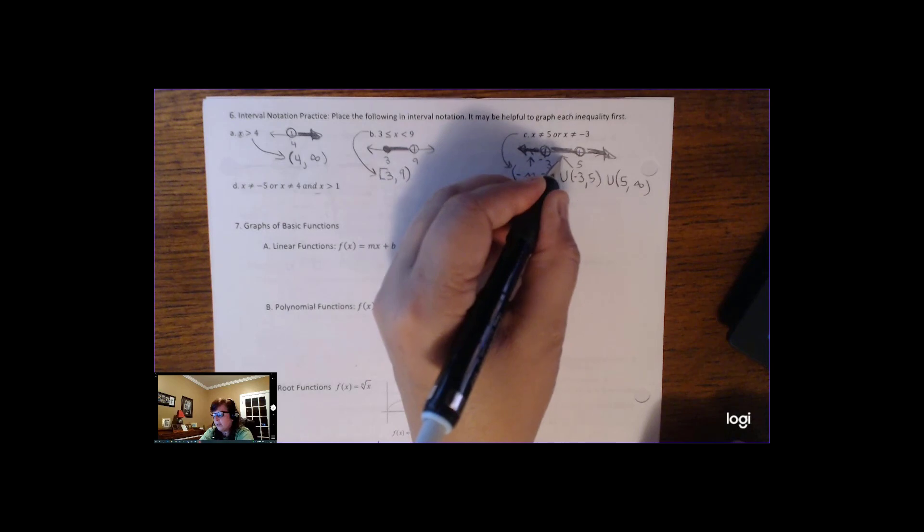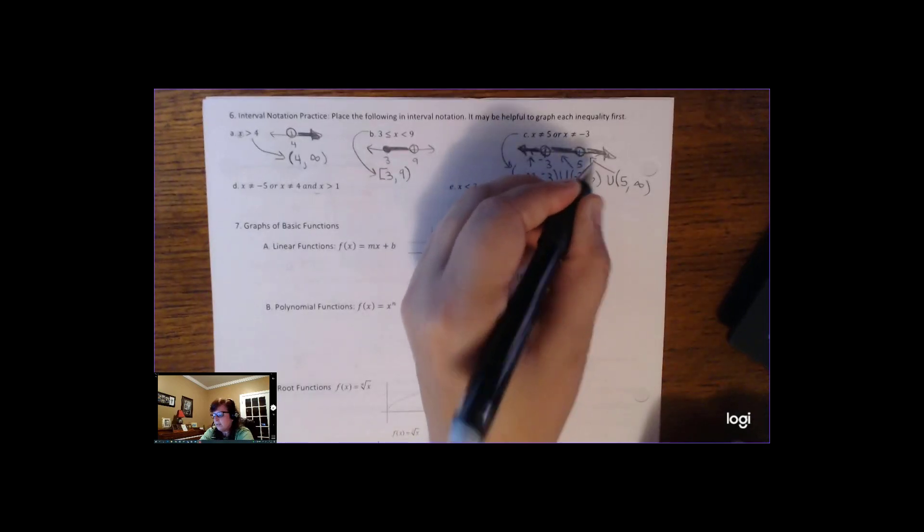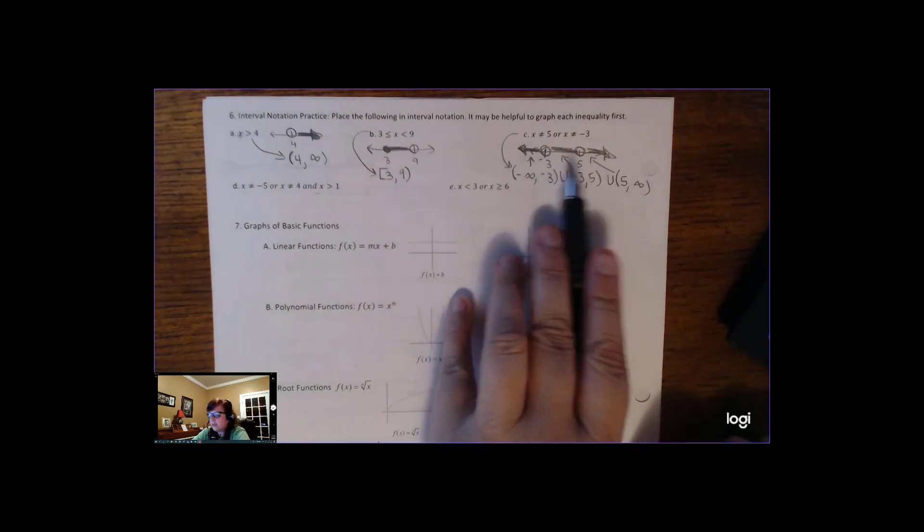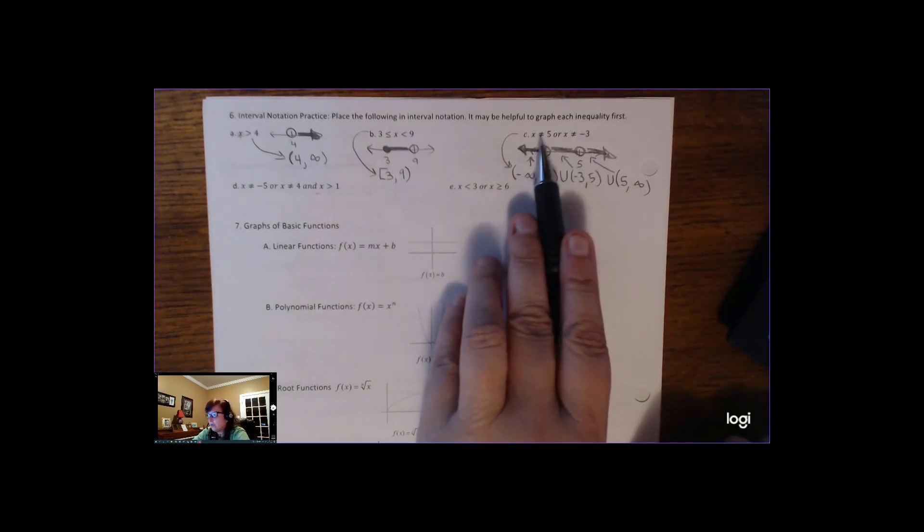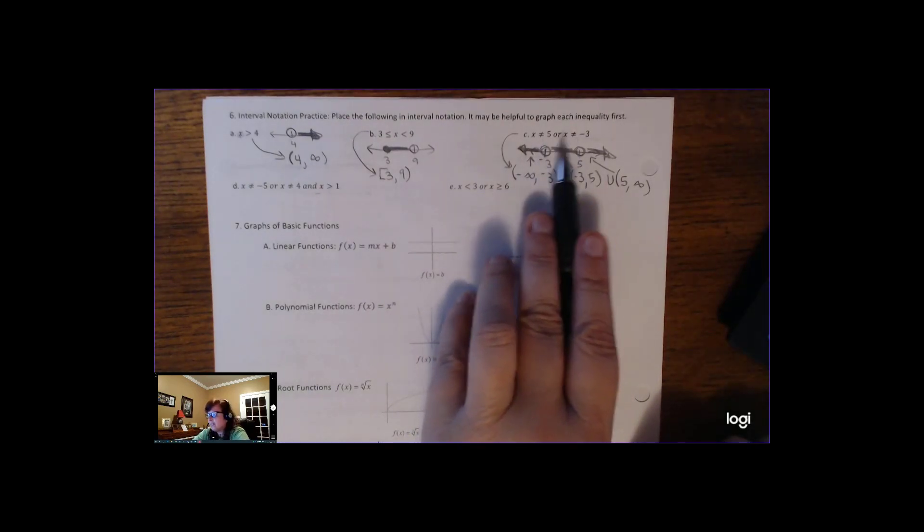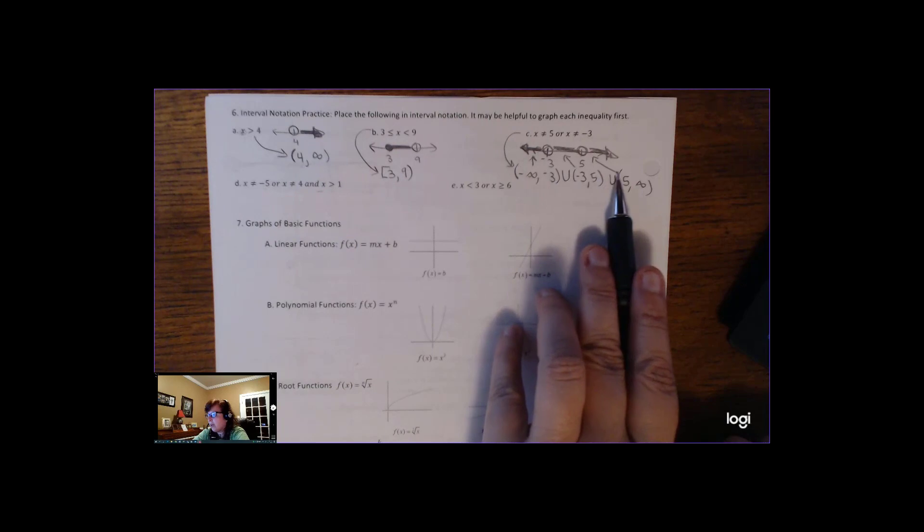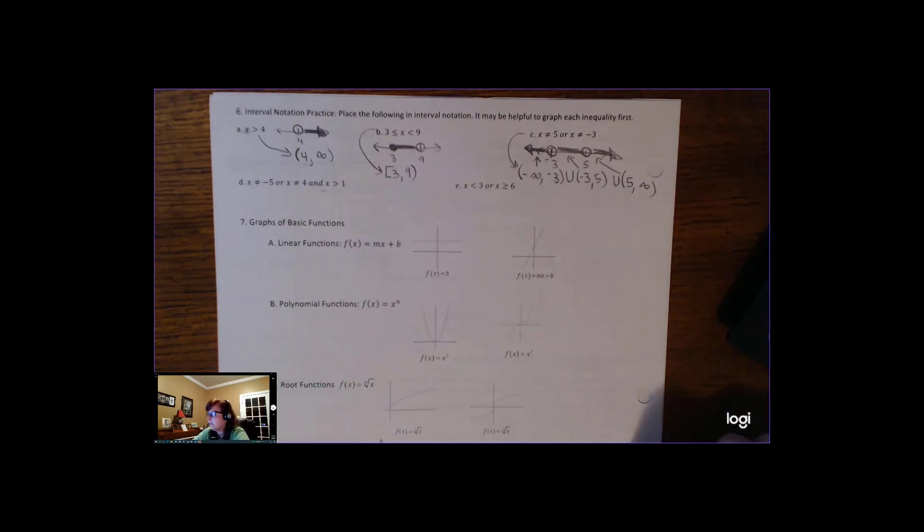So if you draw the number line, each of these little pieces of the interval match up with the solid lines in the graph. And so it's really important to remember, if you've got two things that it can't be, you're going to end up with three pieces of the interval, because we're hopping over negative 3 and we're hopping over 5, but everything else is included.